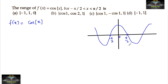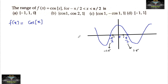π/2 is approximately 3.14/2, which can be taken as approximately 1.5, and minus π/2 is approximately minus 1.5. So between 0 and 1.5 there is 1, and between 0 and minus 1.5 there is minus 1. Now let's split the interval.